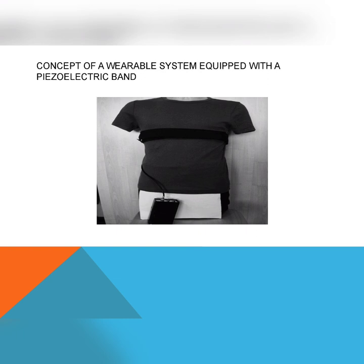In addition to these, wearable systems may include a galvanic skin response sensor, pulse oximetry, radiant thermal sensors, biochemical markers, gas sensors, and cardiopulmonary activity systems. In this topic, I have given an overview of sensors for physiological signals and biochemical parameters which can be easily integrated into wearable monitoring systems.